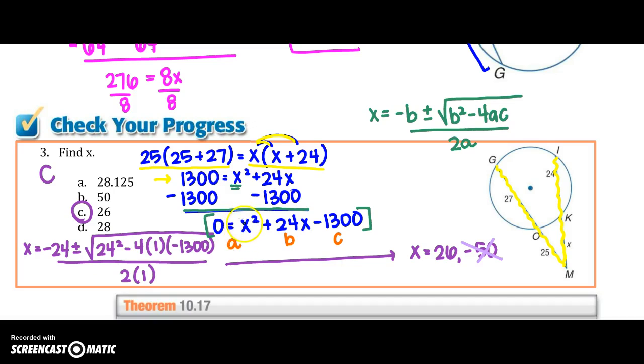Alright, so I represented whatever comes with the X squared, which is 1, is my A. My X is my B, and my non-variable number is my C. And I'm just going to plug all of those numbers into there, so that's where I came up with this right here. If I plug that into my calculator,